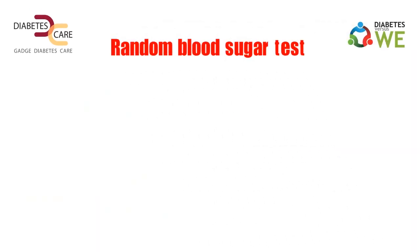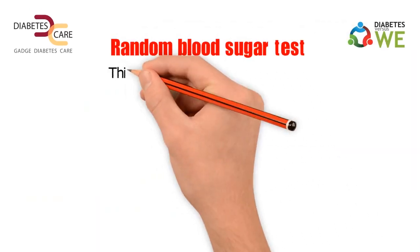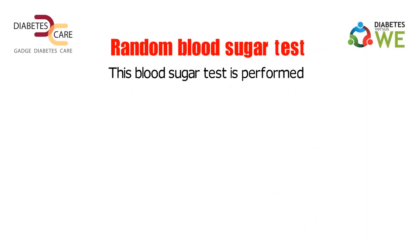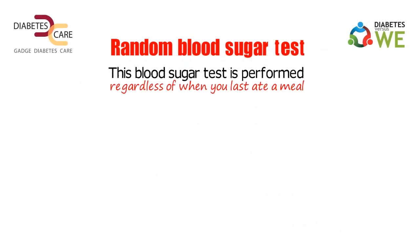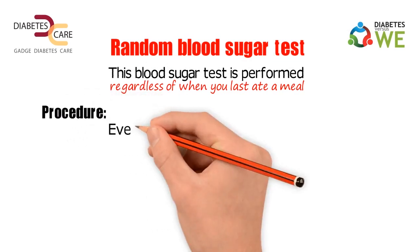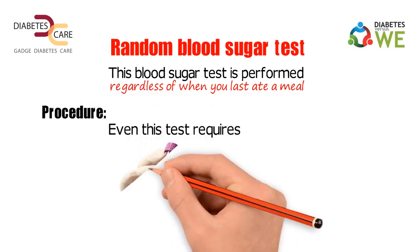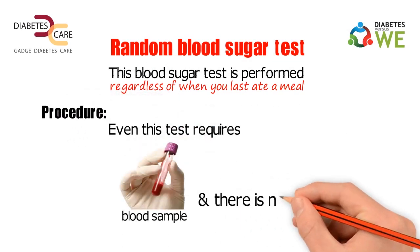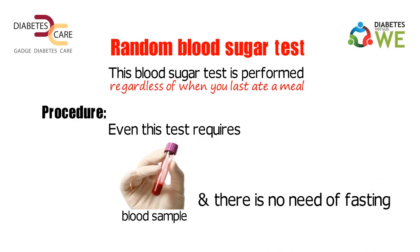The fourth type is the random blood sugar test. This blood sugar test is performed regardless of when you last ate a meal. This test also just requires taking a blood sample and there is no need for fasting.